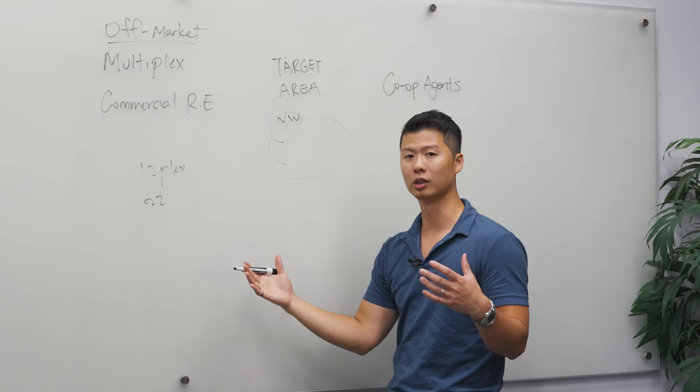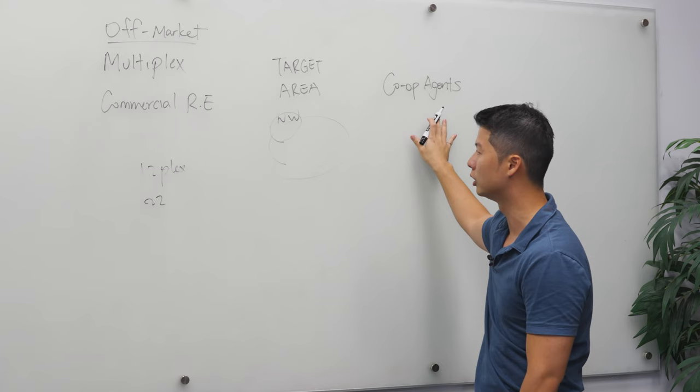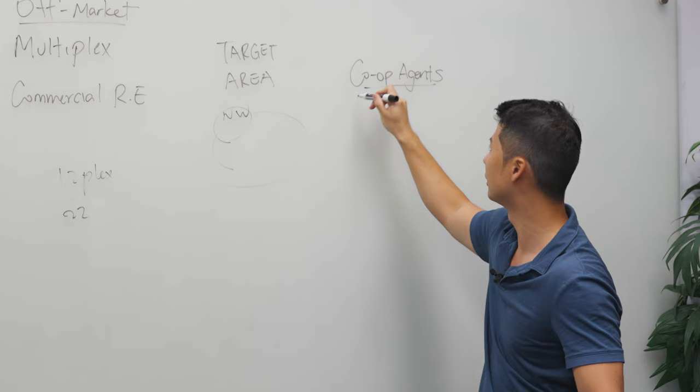So what you do is you actually use, in Canada, like in Ontario, we use dual warehouse. But you can actually pull the co-op agency information of this building. Who's the agent that's helping this current owner purchase a building. And what you want to do is you want to be building up that relationship with the co-op agent.